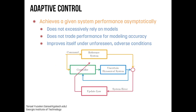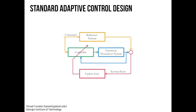Here is the standard adaptive control architecture: the so-called model reference adaptive controller. We have an uncertain dynamical system in the blue box, a controller, and a reference system. The reference system, driven by a command, captures desired overshoot, desired settling time, and so on. I want my system output to behave as the reference system output. This difference corresponds to a system error, and the system error drives the update law, which tunes the controller such that the uncertain system output will behave like the reference system output. That's the philosophy behind model reference adaptive control.